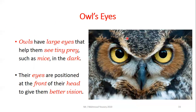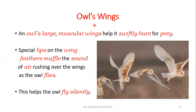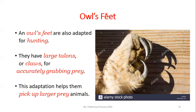Owls have large eyes that help them see tiny prey such as mice in the dark, and their eyes are positioned at the front of their head to give them better vision. An owl's large muscular wings help it swiftly hunt for prey. Special tips on the wing feathers muffle the sound of air rushing over the wings, so owls fly silently. An owl's feet have large talons or claws for accurately grabbing prey, which helps them pick up larger prey animals.